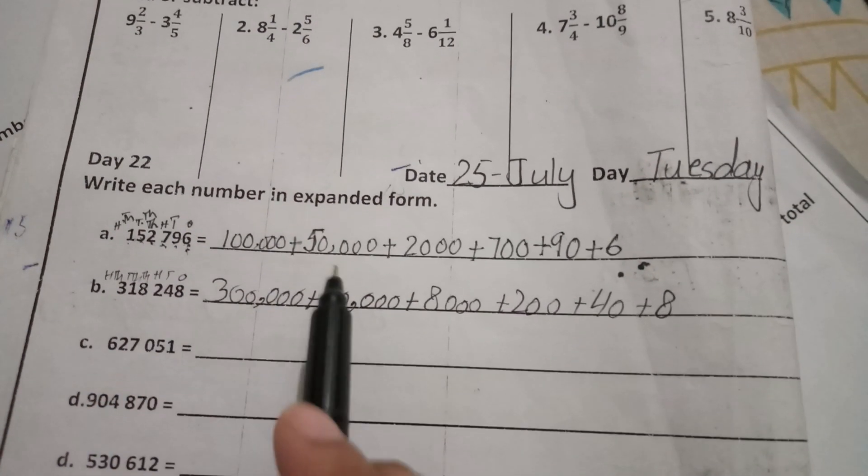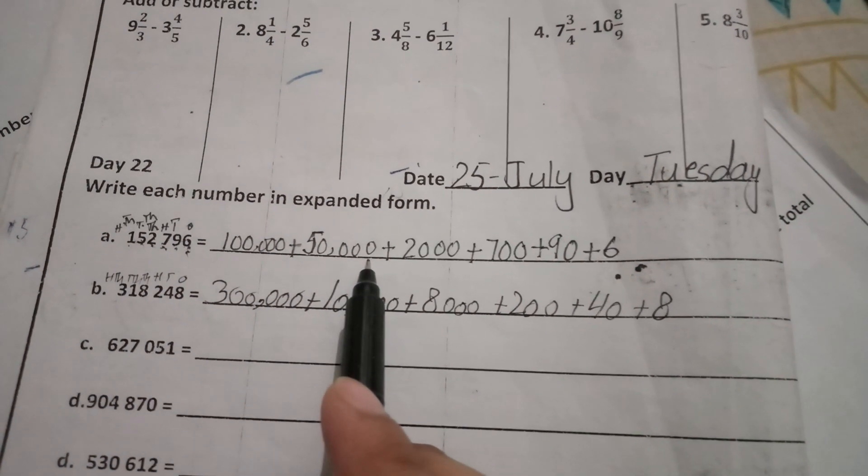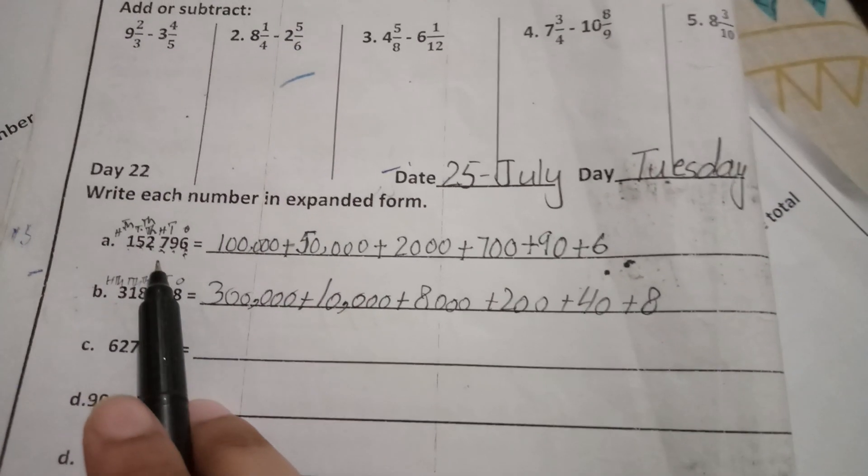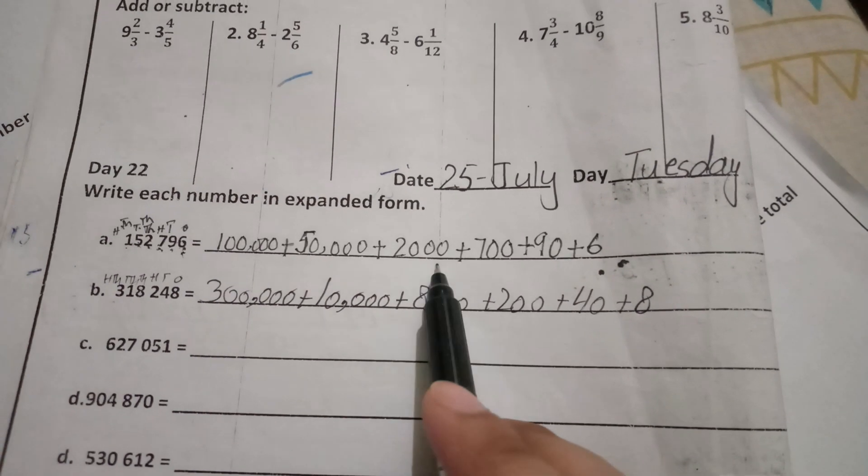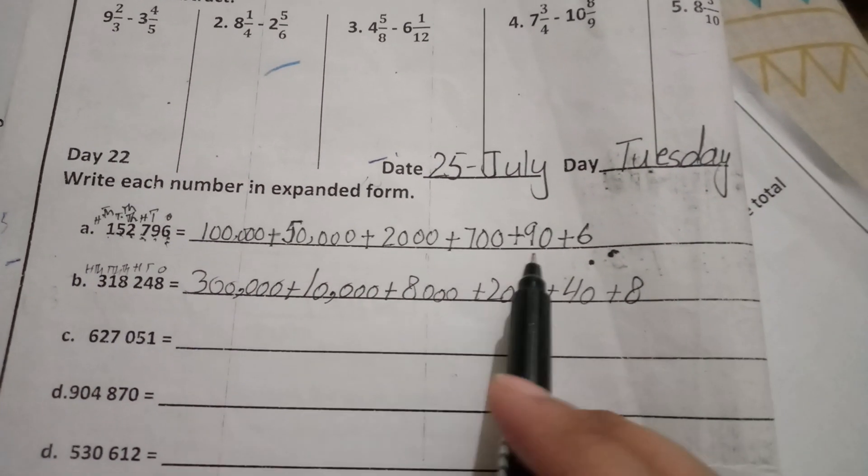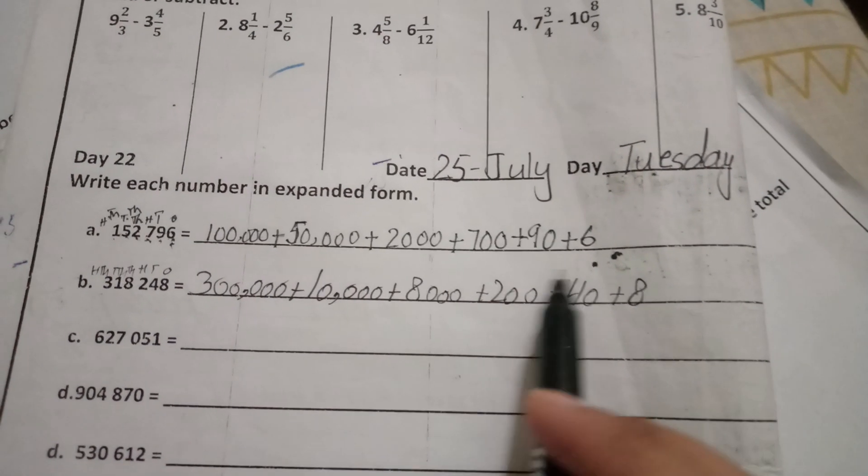Next, 50,000. Then 2,000. Then 700, 90, and 6. Now, 796.